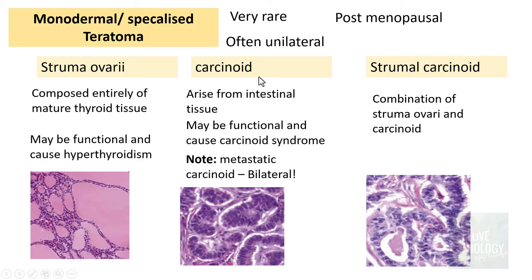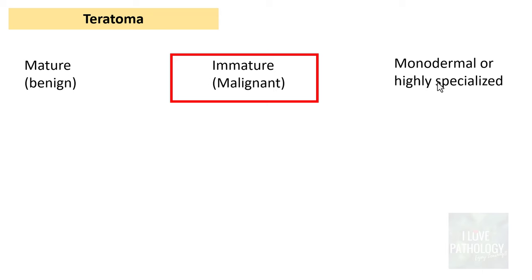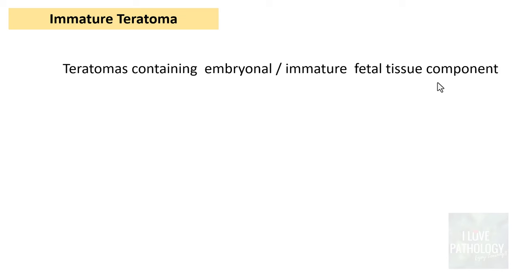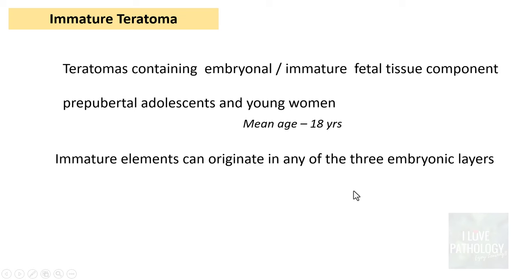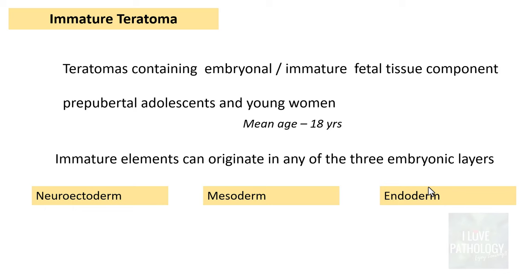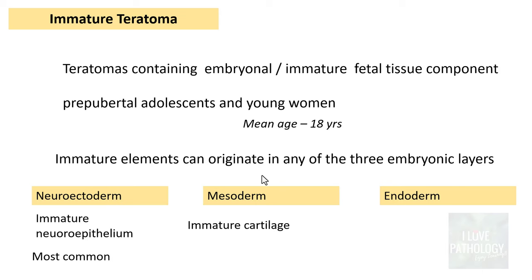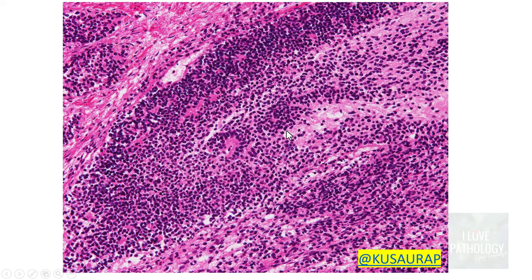Moving on to immature teratoma, also referred to as malignant teratoma. These are teratomas which contain embryonal or immature fetal tissue components. They are often found in pre-pubertal adolescents and young women, with a mean age of presentation of around 18 years. The immature elements can originate in any of the three embryonic layers — ectoderm, endoderm, or mesoderm. In ectoderm, it is predominantly the neuroectoderm. Immature neuroepithelium is the most common immature element seen, followed by immature cartilage and rarely immature gut epithelium. The presence of rosettes indicates immature neural tissue, resembling neural tube-like elements.